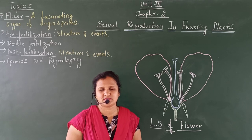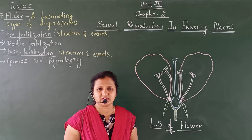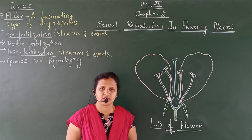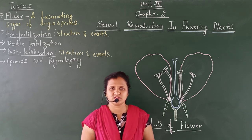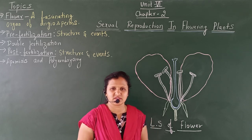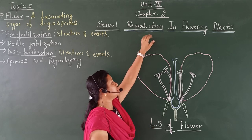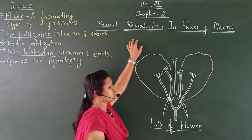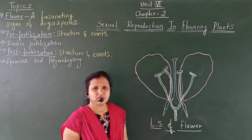Hello students. Today let us start a chapter in your second year Biology, which comes under Unit 6, Chapter 2: Sexual Reproduction in Flowering Plants.